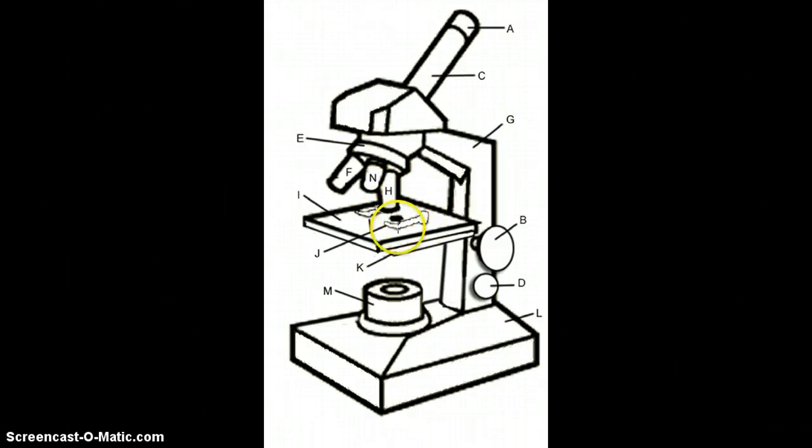J is pointing to the stage clips. These little things are called the stage clips. You put the slide under them and it holds it in place. And K is the diaphragm.